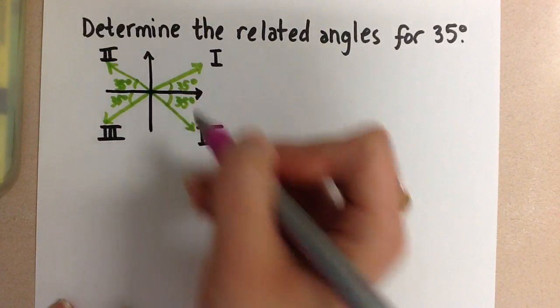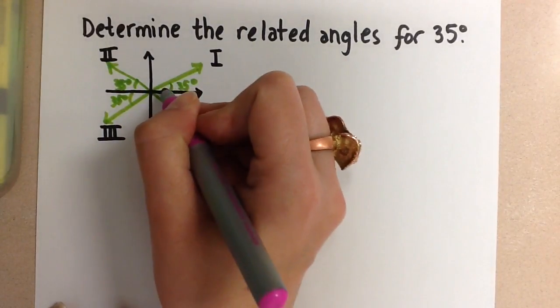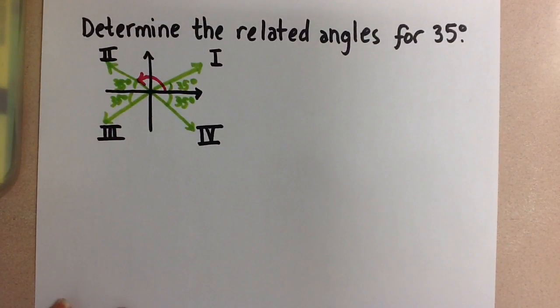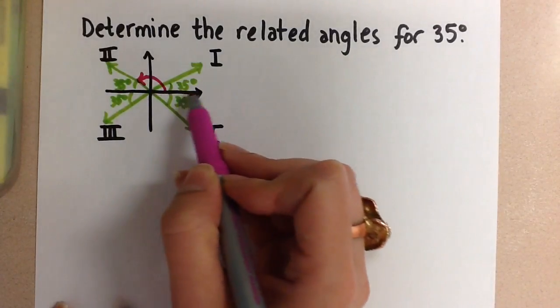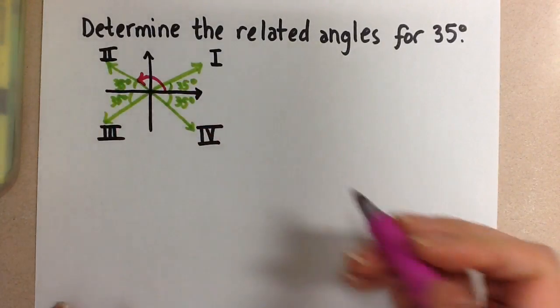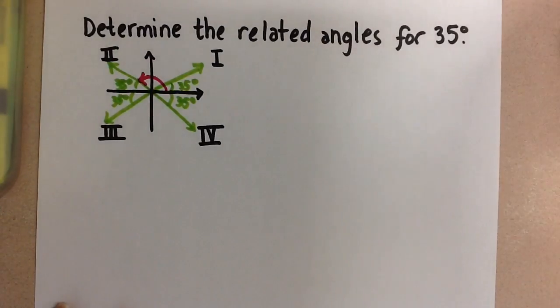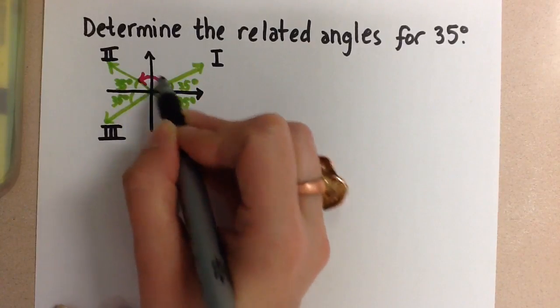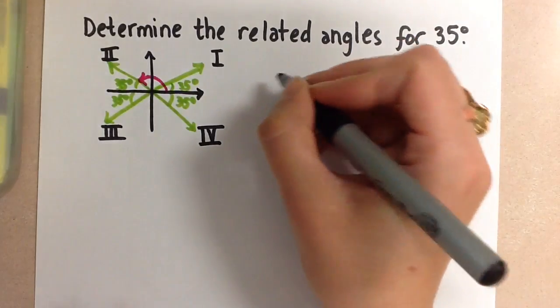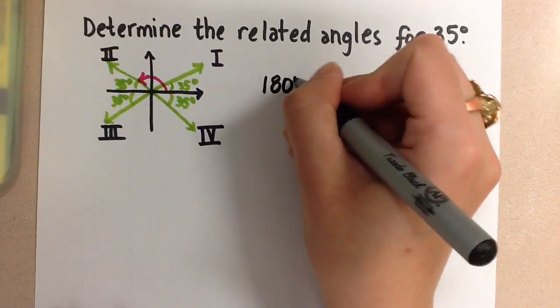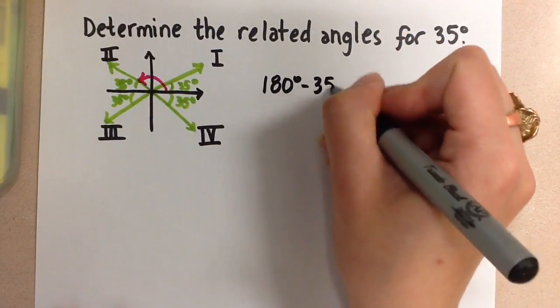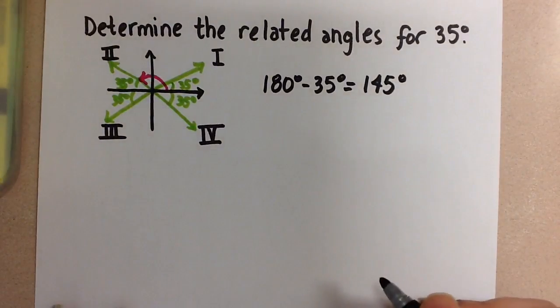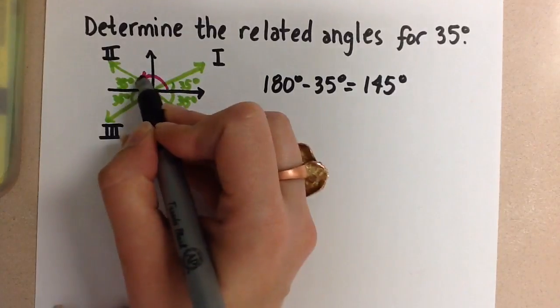So we already have this first one, the 35 degrees. The next one we're going to find is this angle right here. So that's the counterclockwise angle made with the positive x-axis in this terminal arm. So to do that, we can do 180 degrees minus 35 degrees. So our first one will be 180 degrees minus 35 degrees, and this gives us a related angle of 145 degrees. So that's that pink angle there.